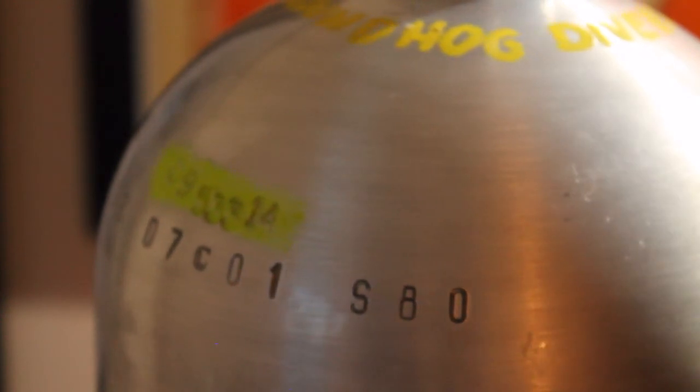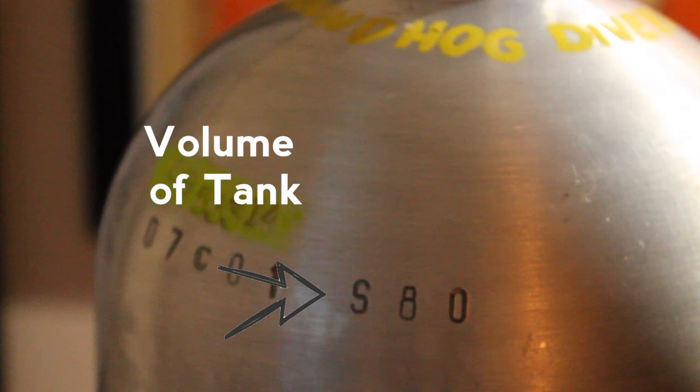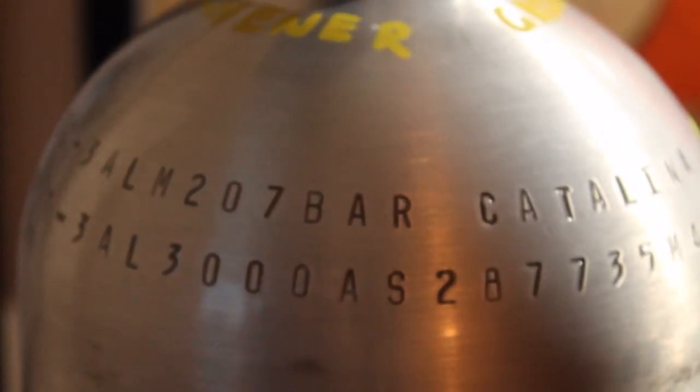And the last bit of information that we have on this cylinder is the S80. And this S80 simply stands for that the cylinder is scuba, it's for scuba, and that it's 80 cubic feet of air in this tank. If this particular tank as an example here is a, if it were a 63, then it would say S63, or if it was a little pony bottle, it might say S19 or whatever the cubic footage of the tank is, this will dictate, this will be demonstrated on the tank.